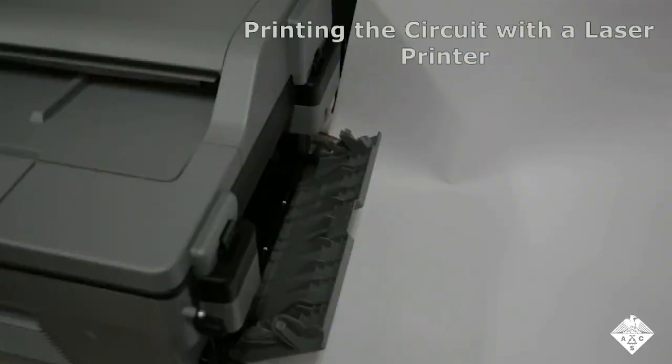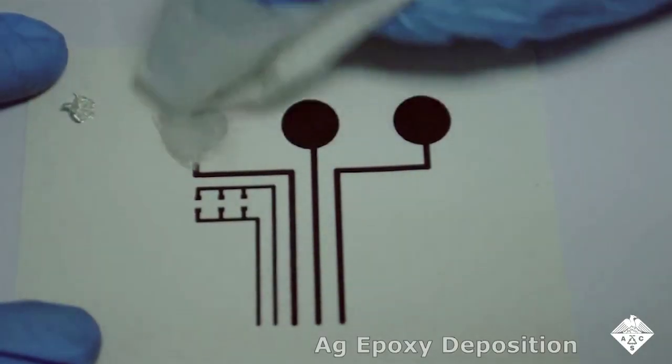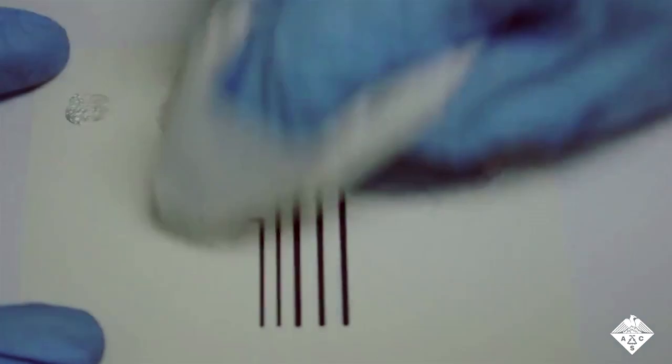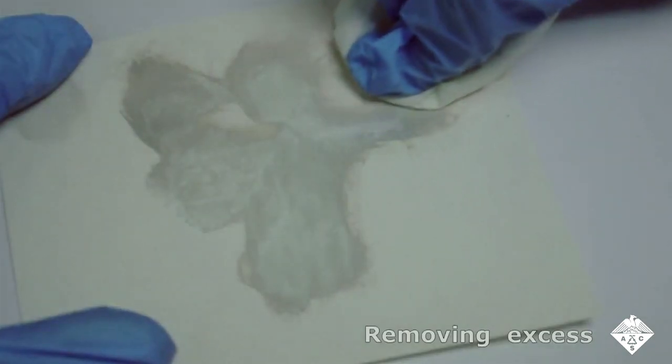In the new approach, the researchers patterned a circuit template onto a sheet of transfer tattoo paper with an ordinary desktop laser printer. Then they coated the template with silver paste, which stuck only to the printed toner ink. They wiped away the excess silver.